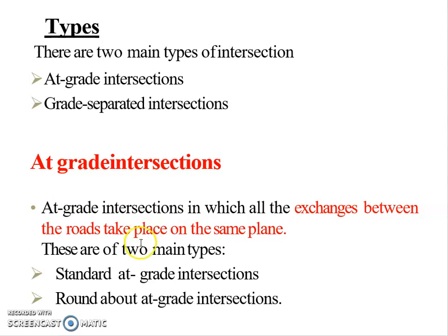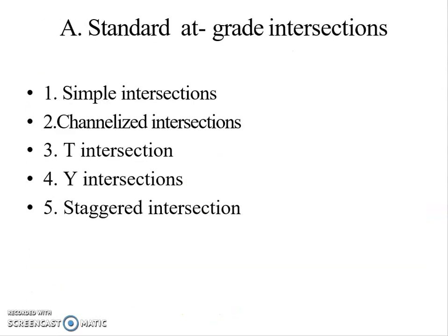The first type is standard at-grade intersections and the second is roundabout at-grade intersections. Standard at-grade intersections are divided into five classifications: first, simple intersections; second, channelized intersections; third, T-intersections; fourth, Y-intersections; and fifth, staggered intersections.